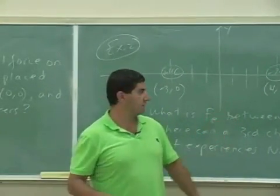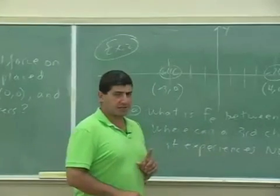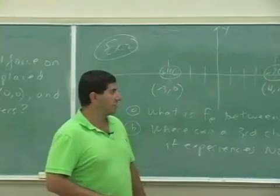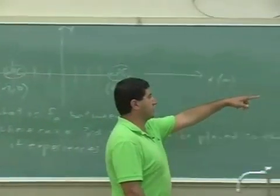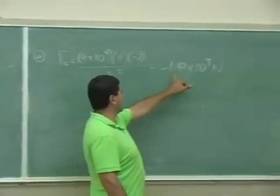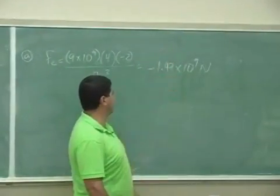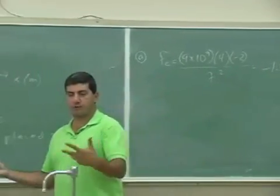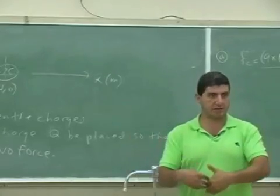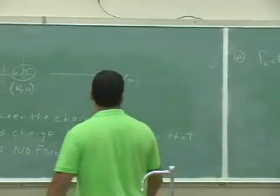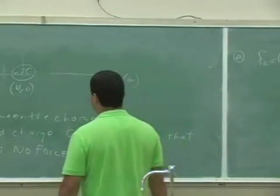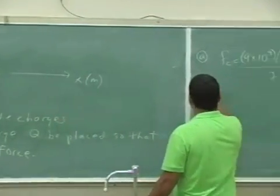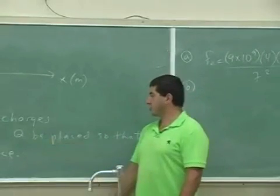It's a big number right, because the charges themselves are big, so we would expect that. A lot of times when you're asked to find the force between charges, we'll just give the absolute magnitude — like positive 1.47 — we're just saying it's 1.47 in magnitude, but it's attractive. Sometimes you'll see it where it's just the magnitude.